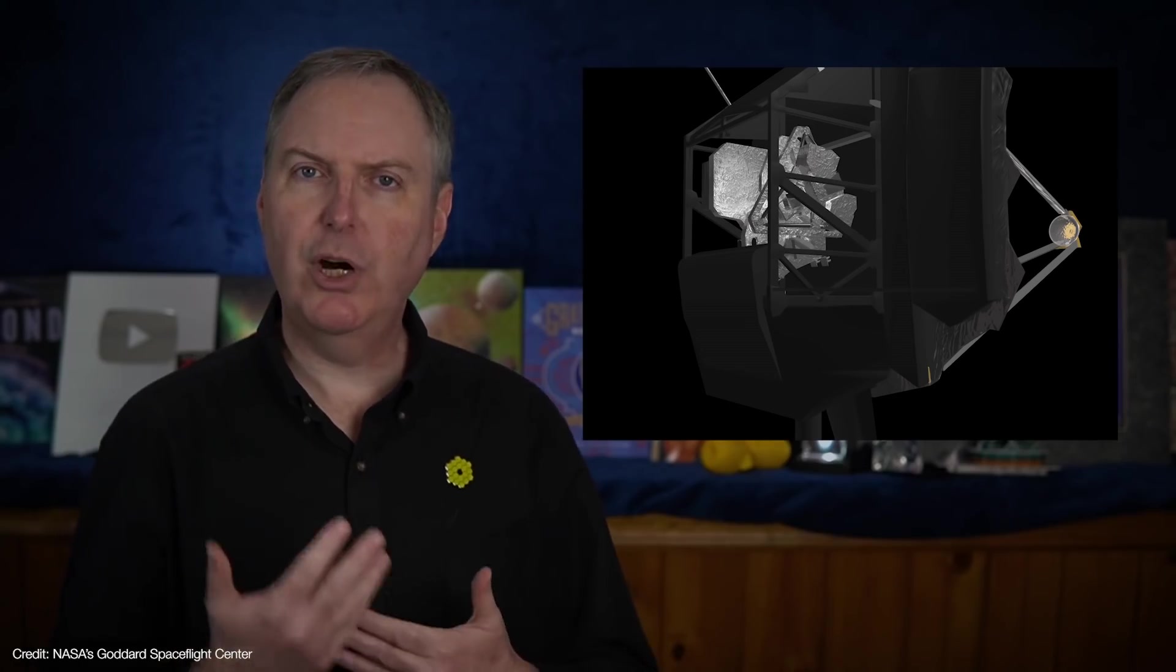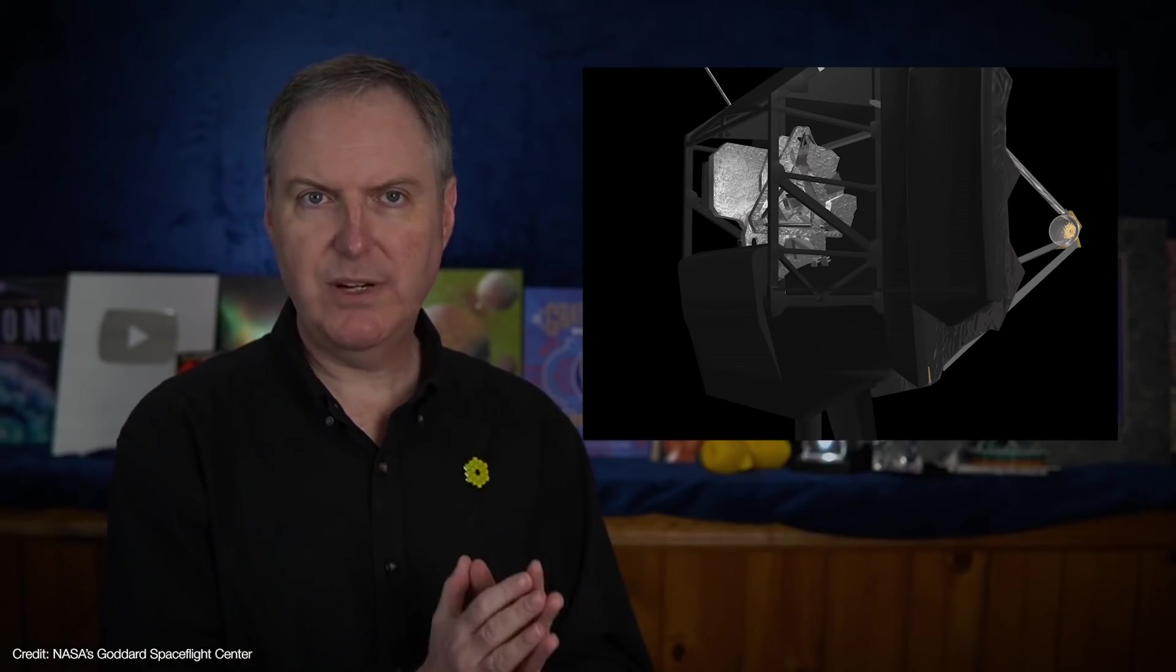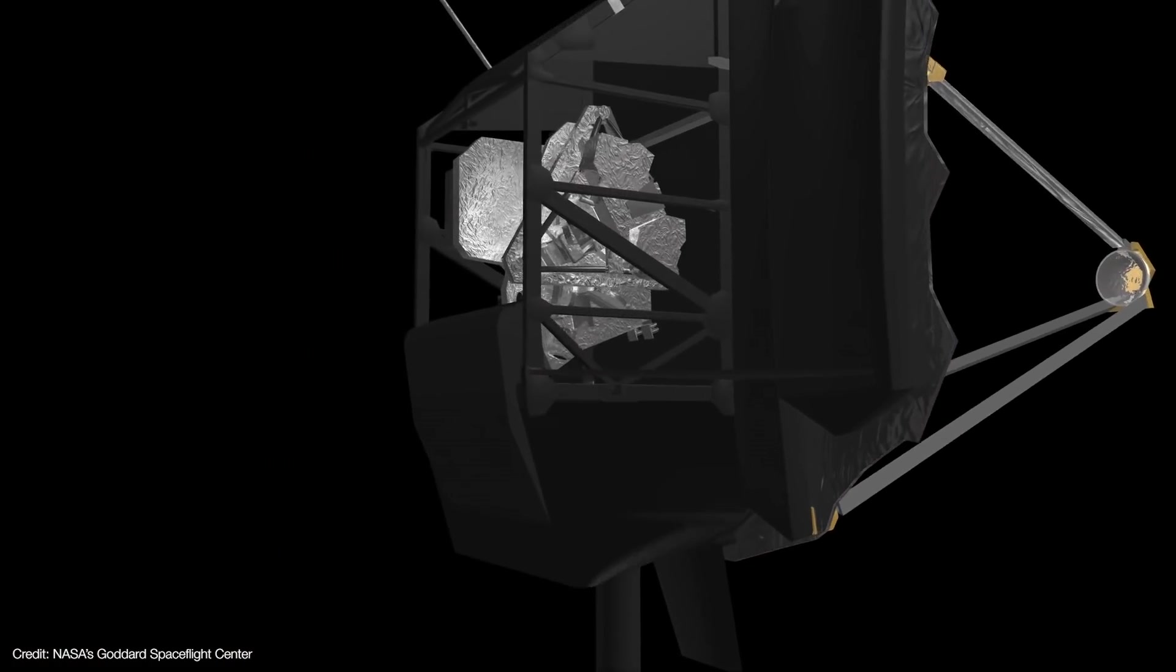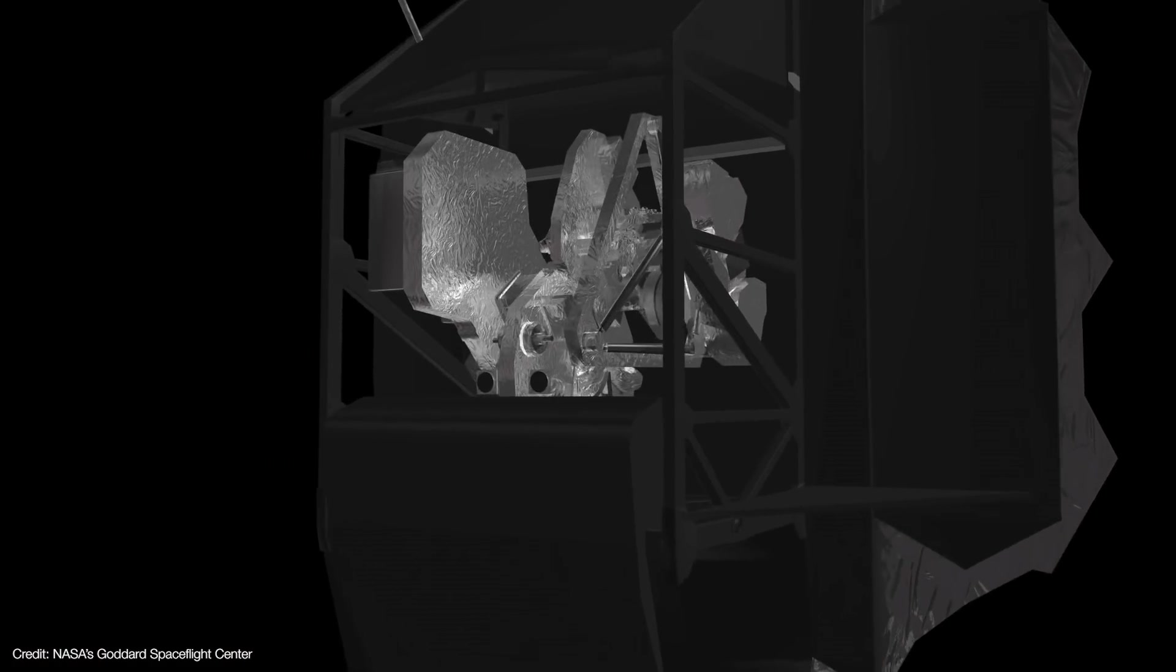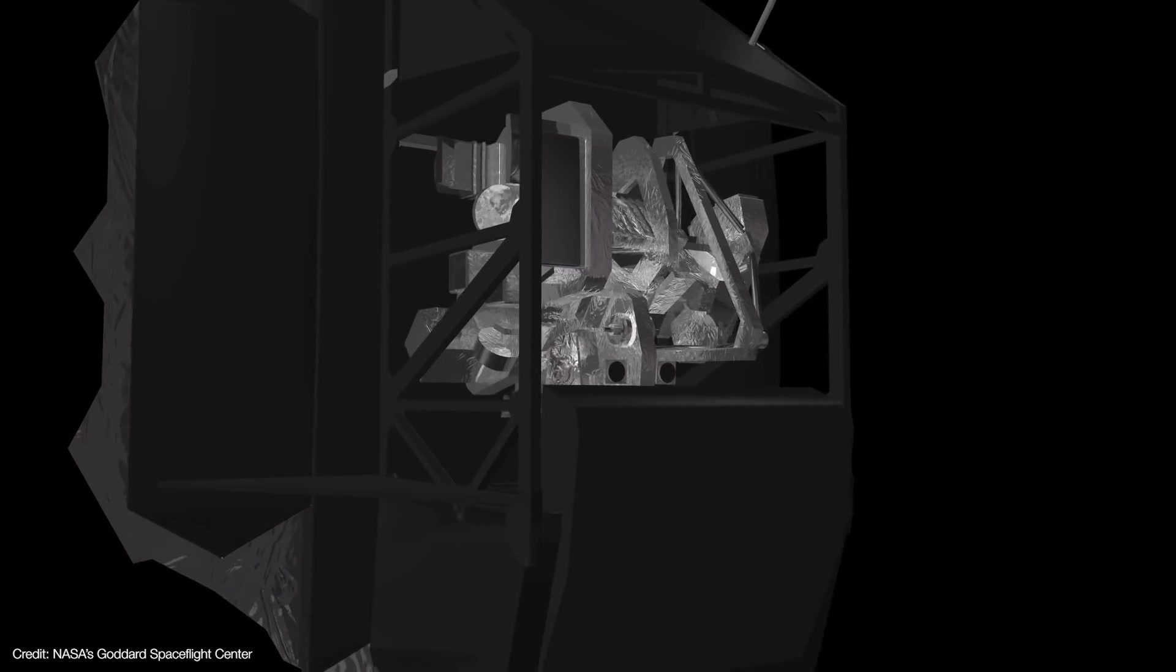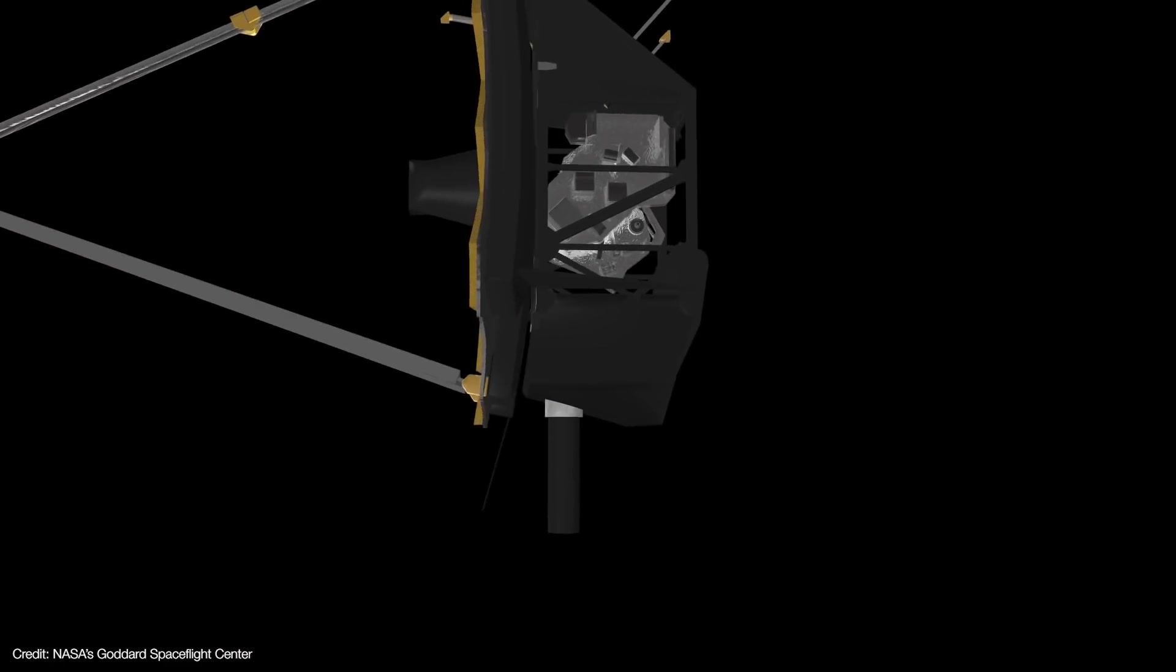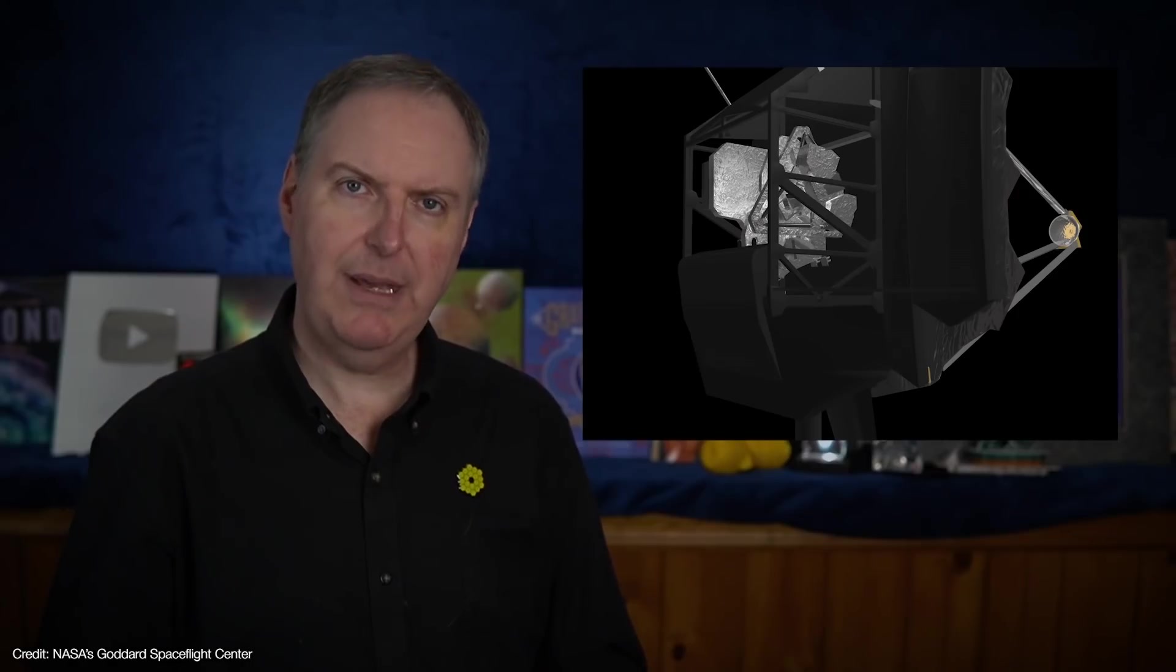However, the ISIM is made up of carbon fiber, which likely has water vapor trapped within its structures. Once exposed to the vacuum of space, the water vapor starts to outgas. If outgassing water vapor condenses on the instrument's mirrors and electronics, it will quickly freeze into place and probably render the instruments useless, and that's bad.